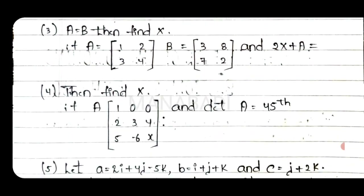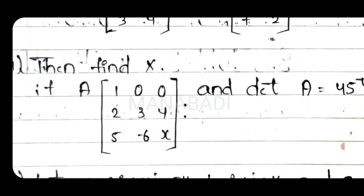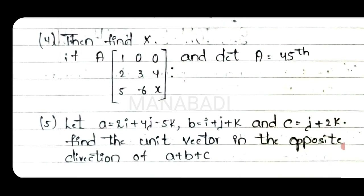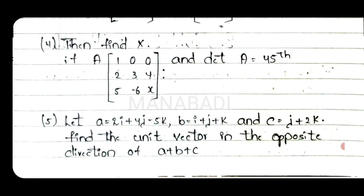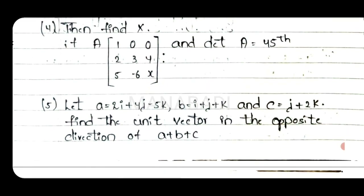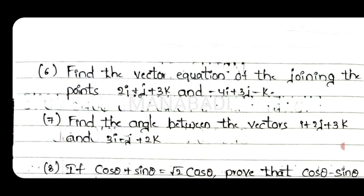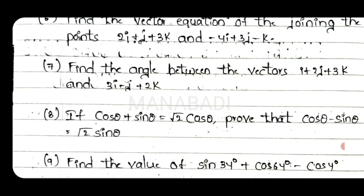This is the third question. Fourth question: 3x3 matrix — x can't go, that A is 45, so we can't sum it. Fourth question, fifth question: this is A, B and C equations. Find the unit vector in the opposite direction of A plus B plus C. Here is the fifth question. Sixth question: find the vector equation joining the points 2i plus j plus 3k and minus 4i plus 3j minus k.